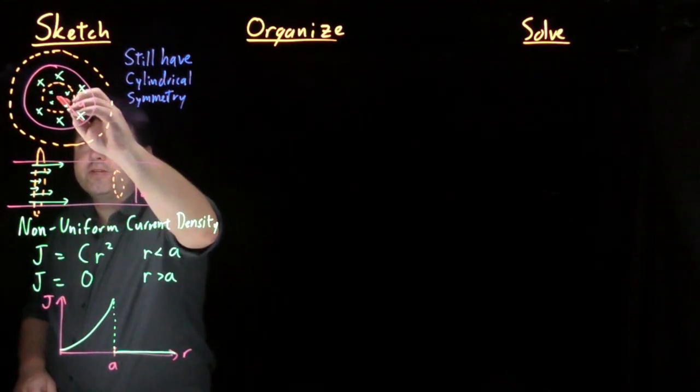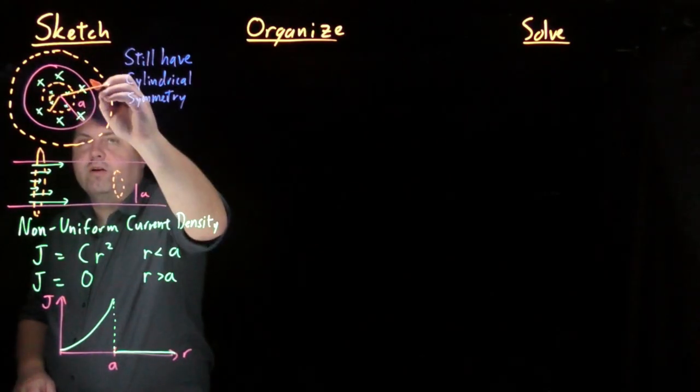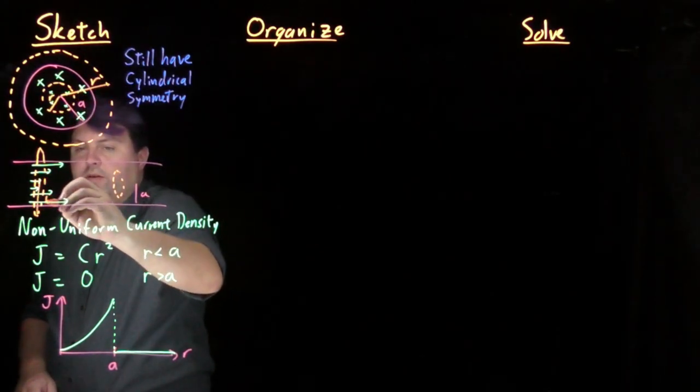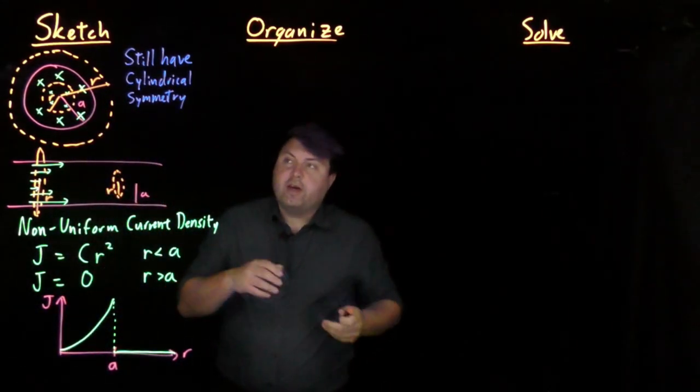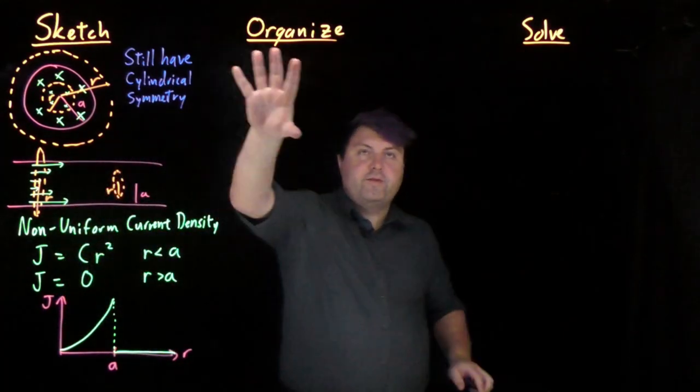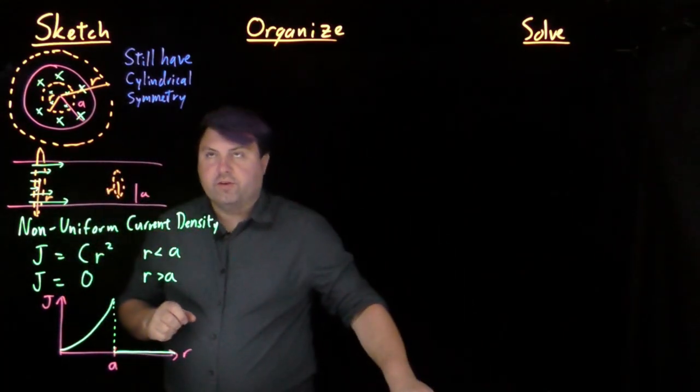So just to remind ourselves, this is going to be some variable r for both, so variable r for both. And so we need two different regions to solve, so we're going to have two different regions to solve over here.